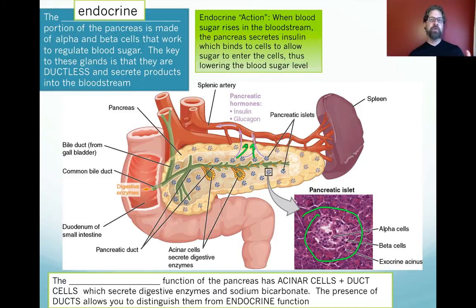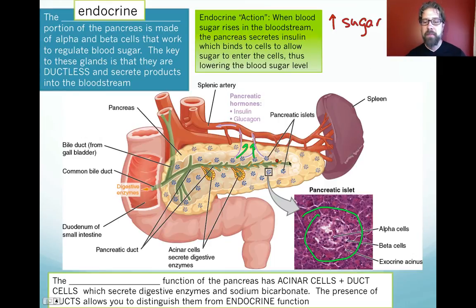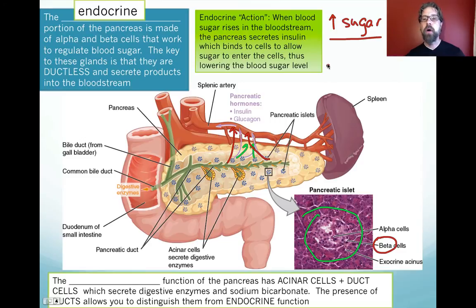The endocrine function of the pancreas: when blood sugar rises after a rich meal, the pancreas secretes insulin from its beta cells into the bloodstream. Insulin binds to cells, allowing sugar to enter and thus lowering blood sugar levels. So increased sugar from a meal leads to a decrease in blood sugar via insulin action — another negative feedback loop.